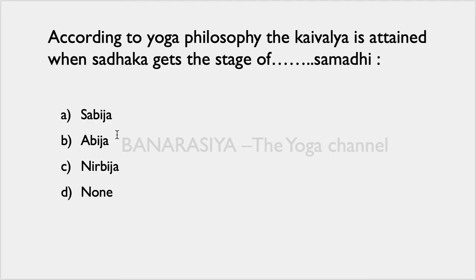According to yoga philosophy, Kaivalya is attained when the sadhaka gets to which stage of samadhi: Dash Samadhi, Sabij, Abij, or Nirbij? This question is from Patanjali Yoga Sutra, which states that when a person becomes seedless — when past karmas and memories are also dissolved in practice — it is called the Nirbij stage of samadhi, and that is the stage when Kaivalya is attained.